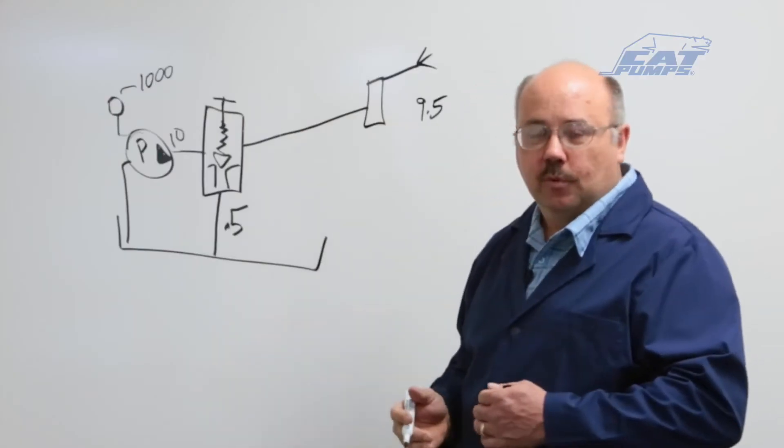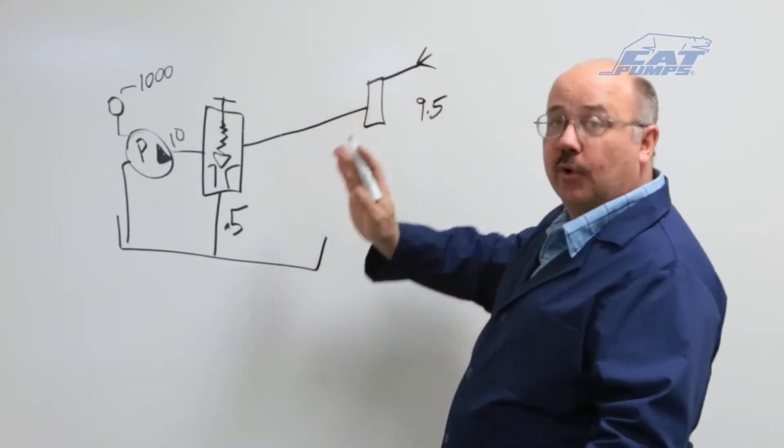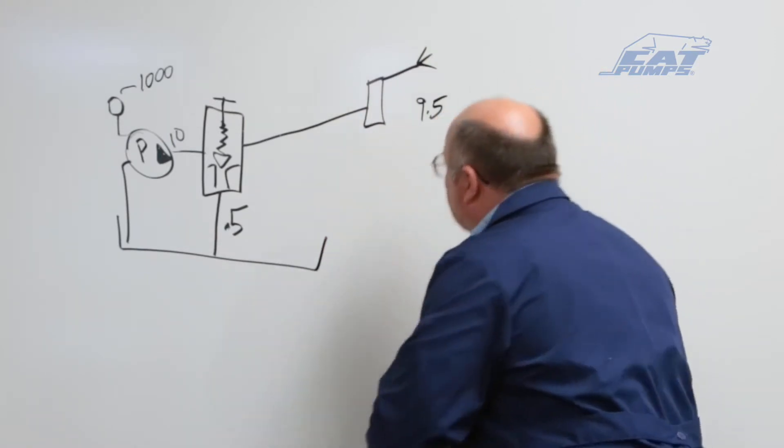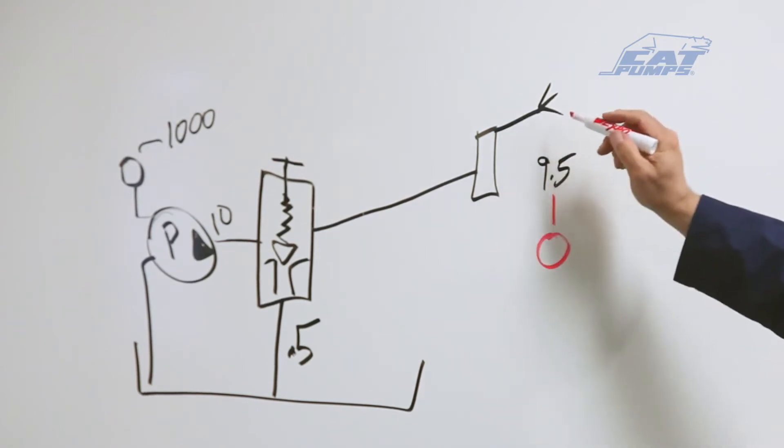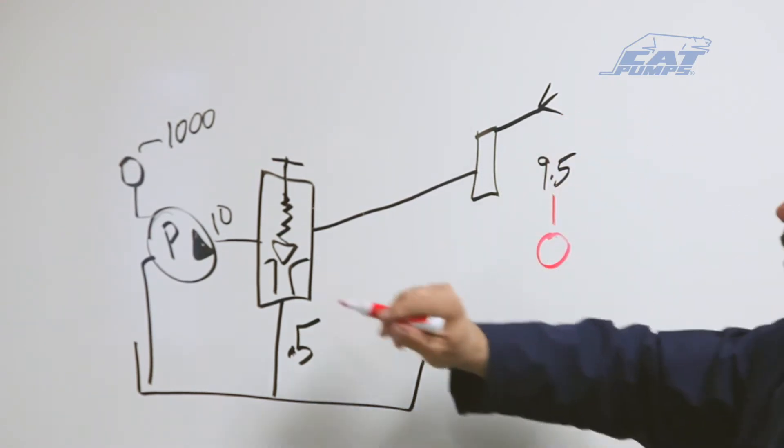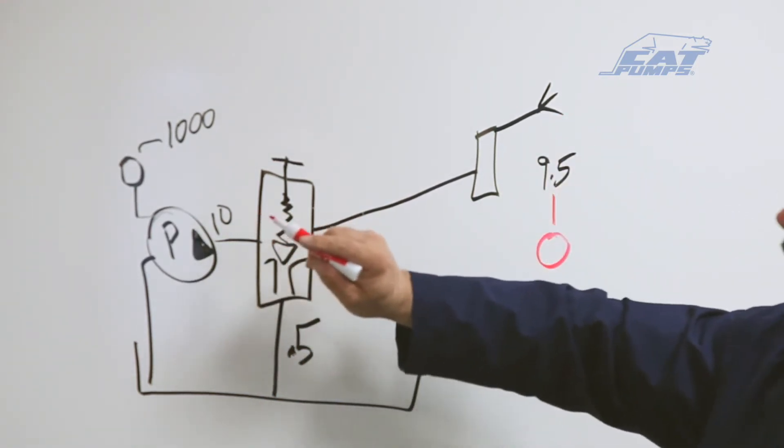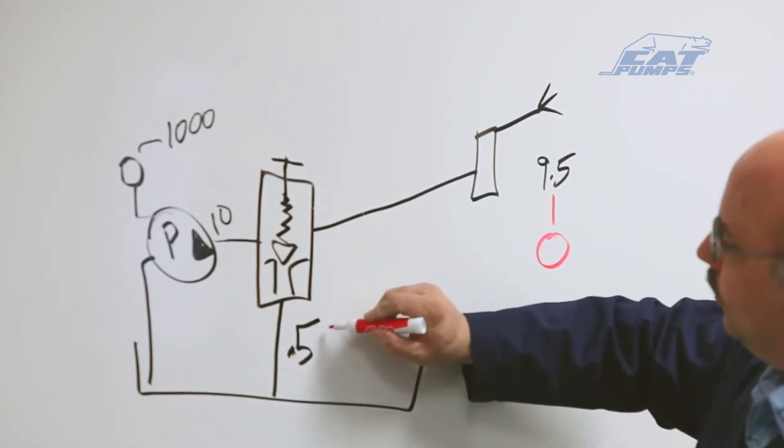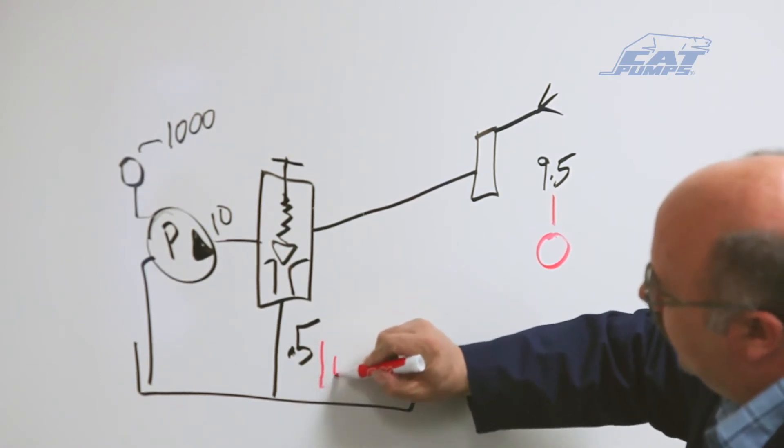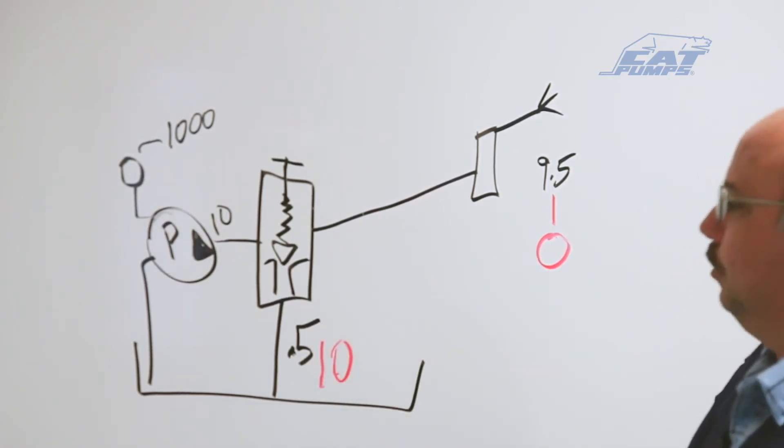Now the pressure override comes into effect when I release the trigger gun. What happens then is this flow will go down to zero because we no longer have any flow out here. This flow stays at 10 all the time—that's the definition of a positive displacement pump. So this flow here will change to 10 gallons per minute.